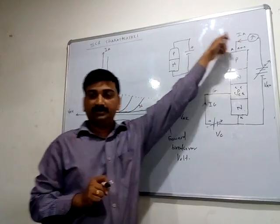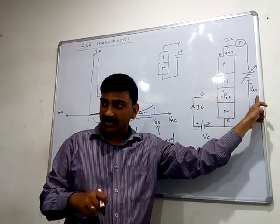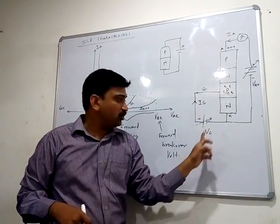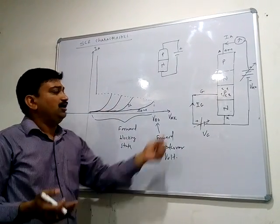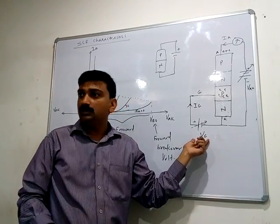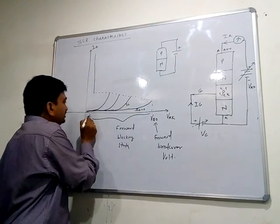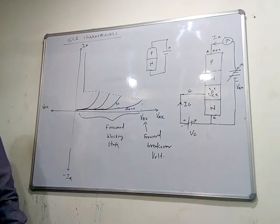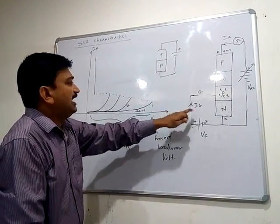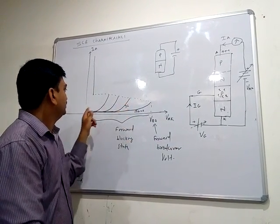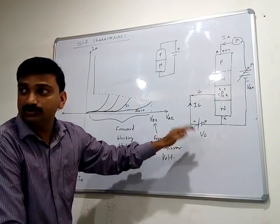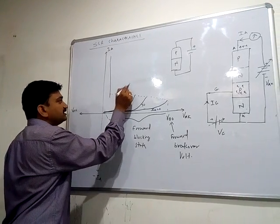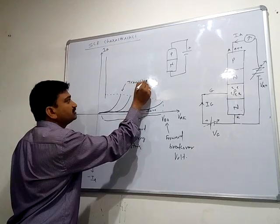We are observing anode current IA by changing VAK and plotting graphs for different VG values. When VG is zero (IG=0), the device stays in the forward blocking state up to VBO, then turns on. As VG increases, the forward breakover voltage decreases — the SCR turns on at a progressively lower VAK. The transition state is very fast in all cases.